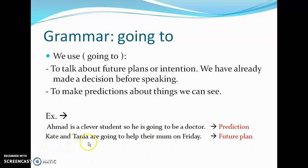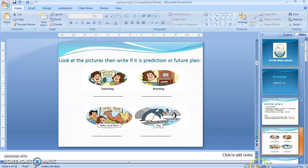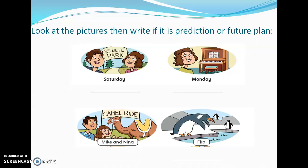For future plans, here is an example: Kate and Tanya are going to help their mom on Friday. This is a future plan because the decision was made before speaking. This is the difference between a prediction and a future plan.